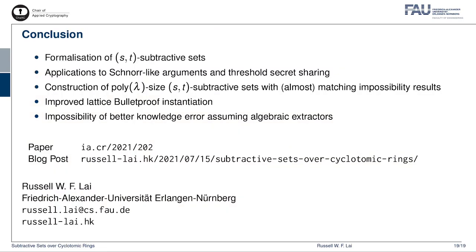To conclude, in this work we formalized the notion of S_t-subtractive sets and applied them to Schnorr-like arguments and threshold secret sharing. We constructed polynomial-sized S_t-subtractive sets over cyclotomic rings with almost matching impossibility results. We obtained improved lattice bulletproofs by instantiating the construction with better S_t-subtractive sets. Finally, we showed that there is a trade-off between knowledge error and slack for Schnorr-like arguments. For the full technical details, I encourage you to check out our paper, which is available on ePrint, or you can also check out the blog post. Thank you.